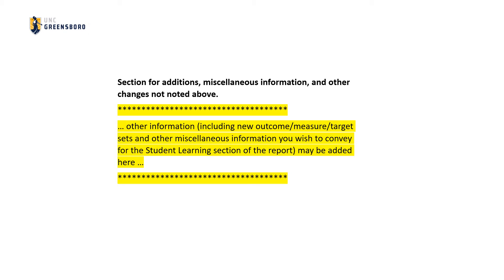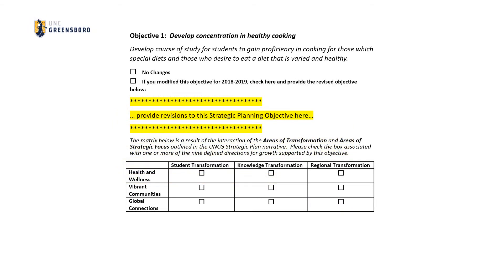Next, you'll find the section for additions, miscellaneous information, and other changes related to the student learning outcomes section. In this optional section, the user is provided with an editable area where other information regarding student learning outcomes may be provided. For example, did the program have a student learning outcome, measure, and target set that wasn't listed in the template? Here's the spot to list that set and its associated findings.